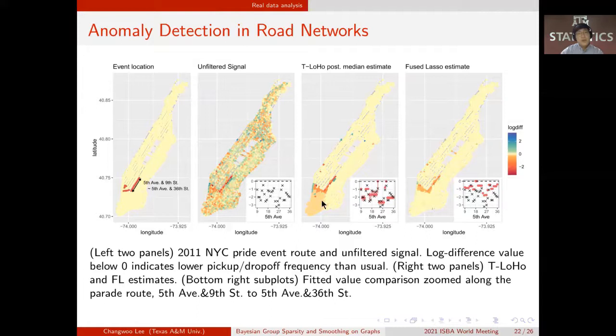So to find this clustered pattern of change of pickup drop-off counts, T-LoHo model and Fused Lasso model both well captures the anomalies on the event route. However, as we can see in the bottom right figure here, T-LoHo model gives a less biased estimate compared to the Fused Lasso, and also provides uncertainty measures. Another notable difference is T-LoHo can capture a decreased taxi activity around the west lower Manhattan area, because of the parade route block, while Fused Lasso cannot due to the increased bias.